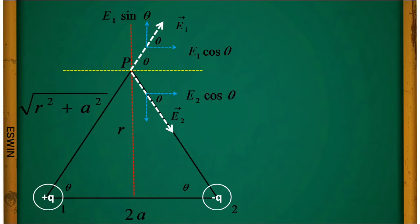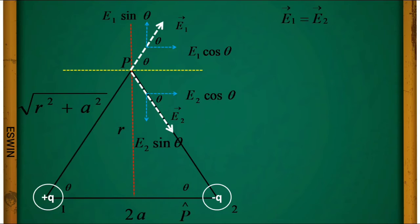Let p-cap be the direction of the dipole. The direction of the dipole is always from −q to +q, while the direction of the electric field is from +q to −q. The magnitudes of E1-bar and E2-bar are equal, so we can write E1-bar = E2-bar. In general, E-bar = Ex-bar + Ey-bar.